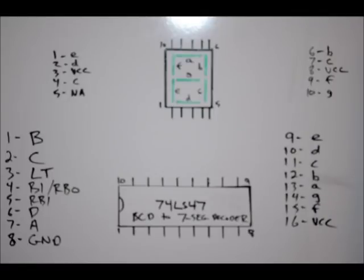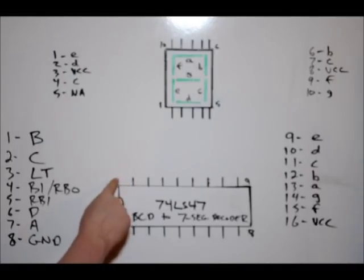So the two chips you're looking at are the 74LS47 BCD to 7-segment display decoder chip and a common anode 7-segment display. So I've written out all of the different pinouts. For the 74LS47 there are 16 different pins.